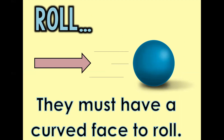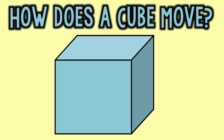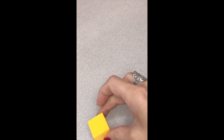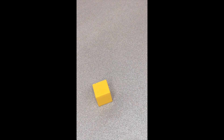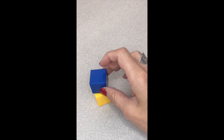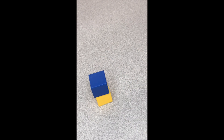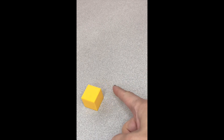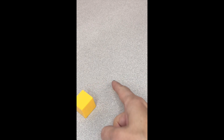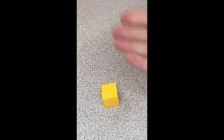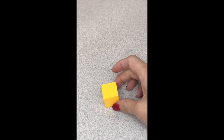Let's look at some examples. How does a cube move? It has flat faces so I can stack it. It has a flat face so I can slide it across the surface, but it can't roll because it does not have a curved face.